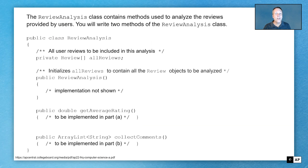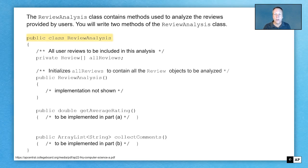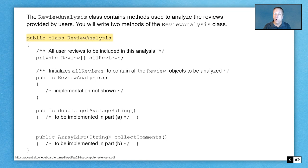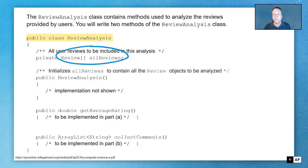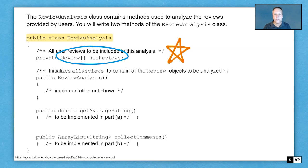The ReviewAnalysis class is what we're going to look at next, and this contains methods used to analyze reviews provided by the users. We're going to write two methods of the ReviewAnalysis class. When approaching a free response question, once you get to the class where you're going to be writing some methods, a really important thing to do is identify instance variables. In this case, we've got an array of the aforementioned Review objects called allReviews. Make sure you use the name allReviews in your solution — it's not reviewAnalysis, it's not reviews. Put a big star next to that — that's my instance variable that I'm going to be using.